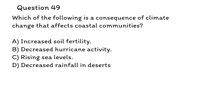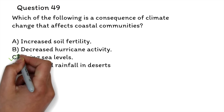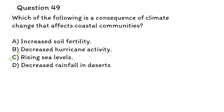Question 49: Which of the following is a consequence of climate change that affects coastal communities? A. Increased soil fertility, B. Decreased hurricane activity, C. Rising sea levels, D. Decreased rainfall and desertification. The correct answer is C, rising sea levels. As global temperatures rise, polar ice caps and glaciers melt, contributing to higher sea levels. Additionally, the warming of the ocean leads to thermal expansion of water, further elevating sea levels. This results in increased coastal erosion, flooding, and can even lead to the displacement of communities. It also threatens important ecosystems such as mangroves and coral reefs.